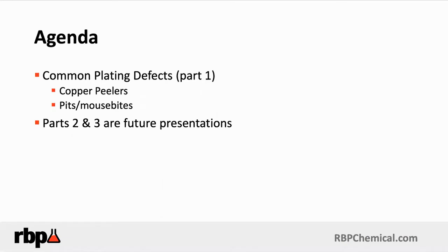There are a number of common plating defects we're going to be talking about in this Take 5 series, where we take five to seven minutes to give you some actionable items you can use in the printed circuit board fabrication arena to solve common defects that reduce your yields and cost you money. Today we're going to be focusing on peeling, where copper peels from the surface, and also on another anomaly called pits and mouse bites. Later in this series, we'll cover additional plating defects.